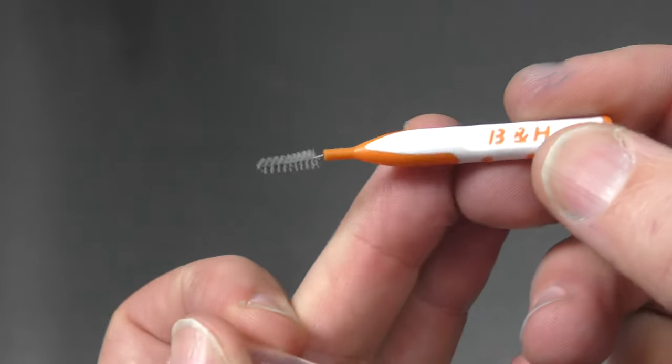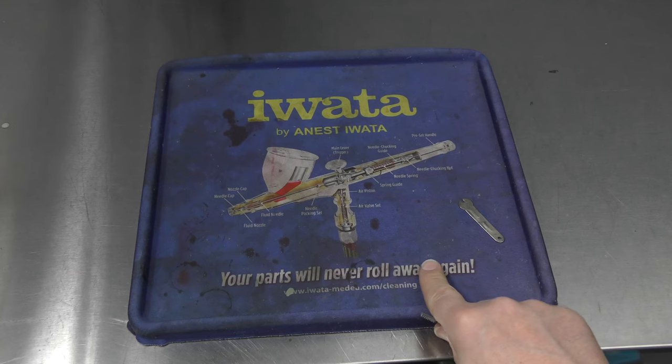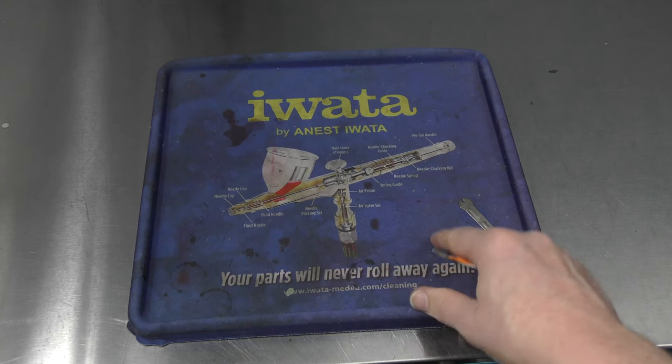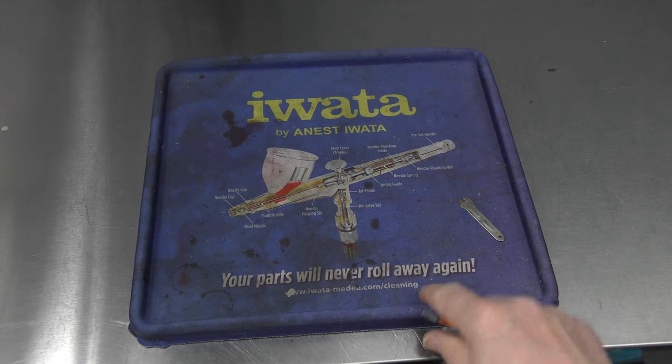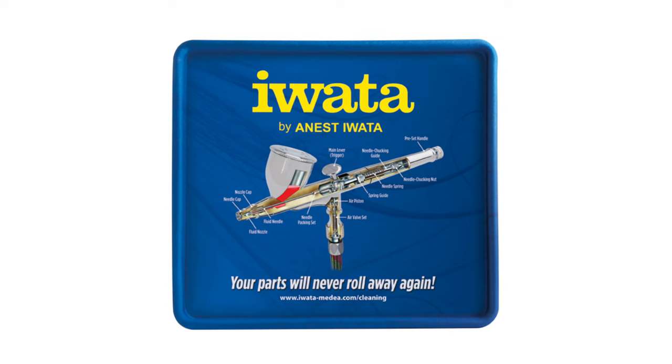The denture brushes are also nice and handy so I'm going to use that as well, and the Iwata cleaning mat just so that when I pull everything apart my parts are not going to roll away. You can see this one gets used all the time. This is what it would look like if it was brand new.